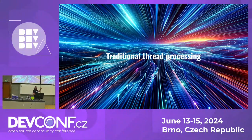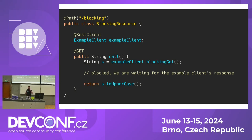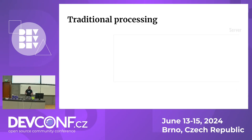I want to quickly go over how we are treating threads in Java since the beginning, because you need to have the full picture. Before JDK 19, where Project Loom was introduced as preview, we had normal blocking code. If you do some remote IO or local IO operation which needs to block, you will always block the thread on which you are running.